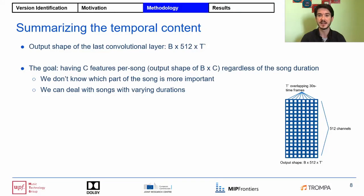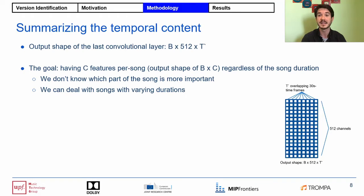The next step is to summarize the information in the temporal dimension. Our goal is to obtain C number of features per song, regardless of the song duration. We do not know which part of the song is more important for identifying it as a version of another song. For example, an artist may put a two-minute intro in the beginning which doesn't exist in the original song, and if we processed only the first two minutes of each song, we would miss any relevant information in that case. Another reason is that tempo modifications are fairly common while creating new versions, and we want to obtain similar features for songs that are similar but played in different tempos and that have different durations.